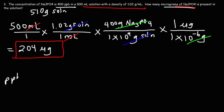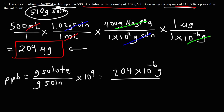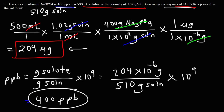Now let's confirm our results. The ppb concentration is the grams of solute divided by the grams of solution, times 10 to the 9. The grams of solute is 204 micrograms, or 204 times 10 to the minus 6 grams. The grams of solution is 510 grams. So 204 times 10 to the minus 6, divided by 510, times 1 times 10 to the 9, is indeed 400 ppb. It's always good to check your work to make sure you have the right answer.